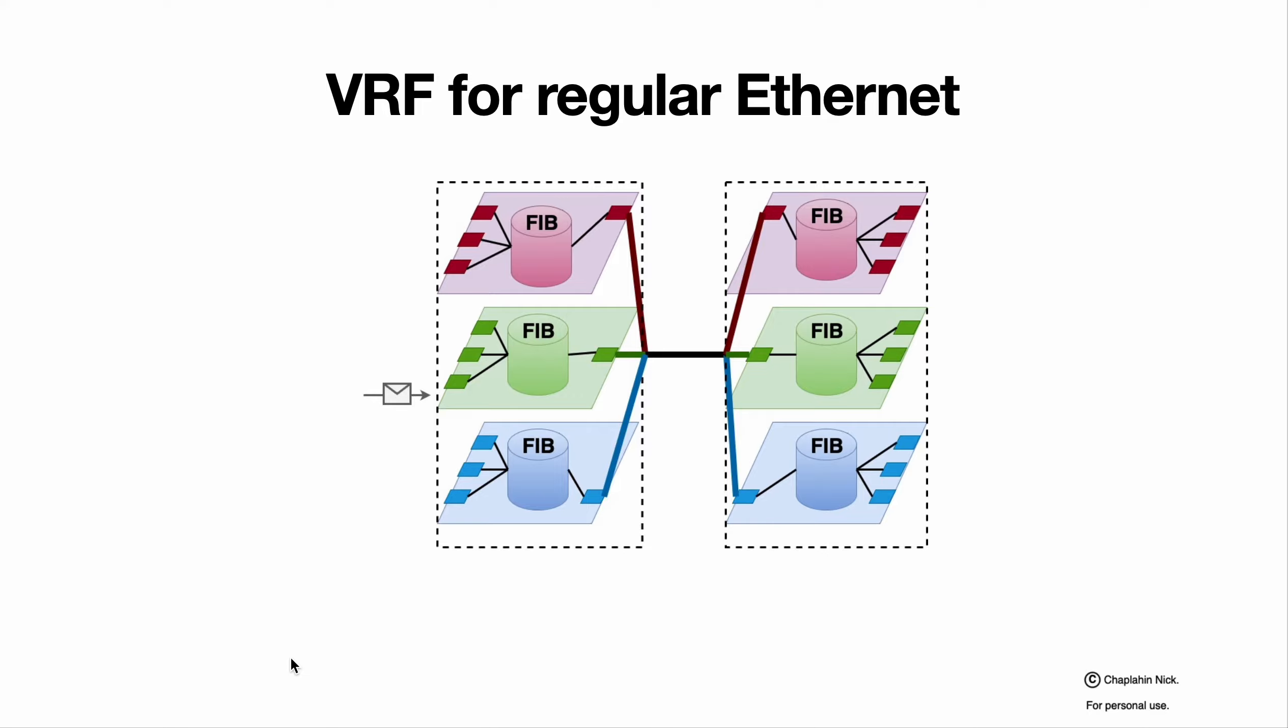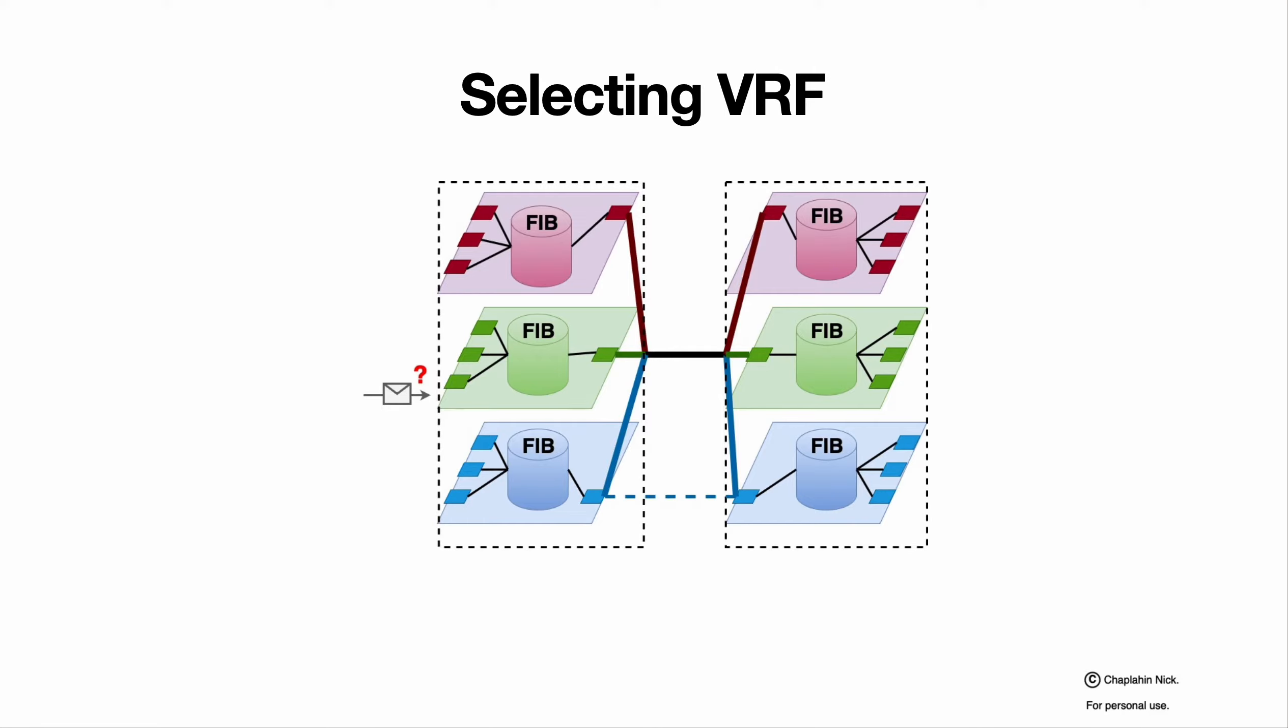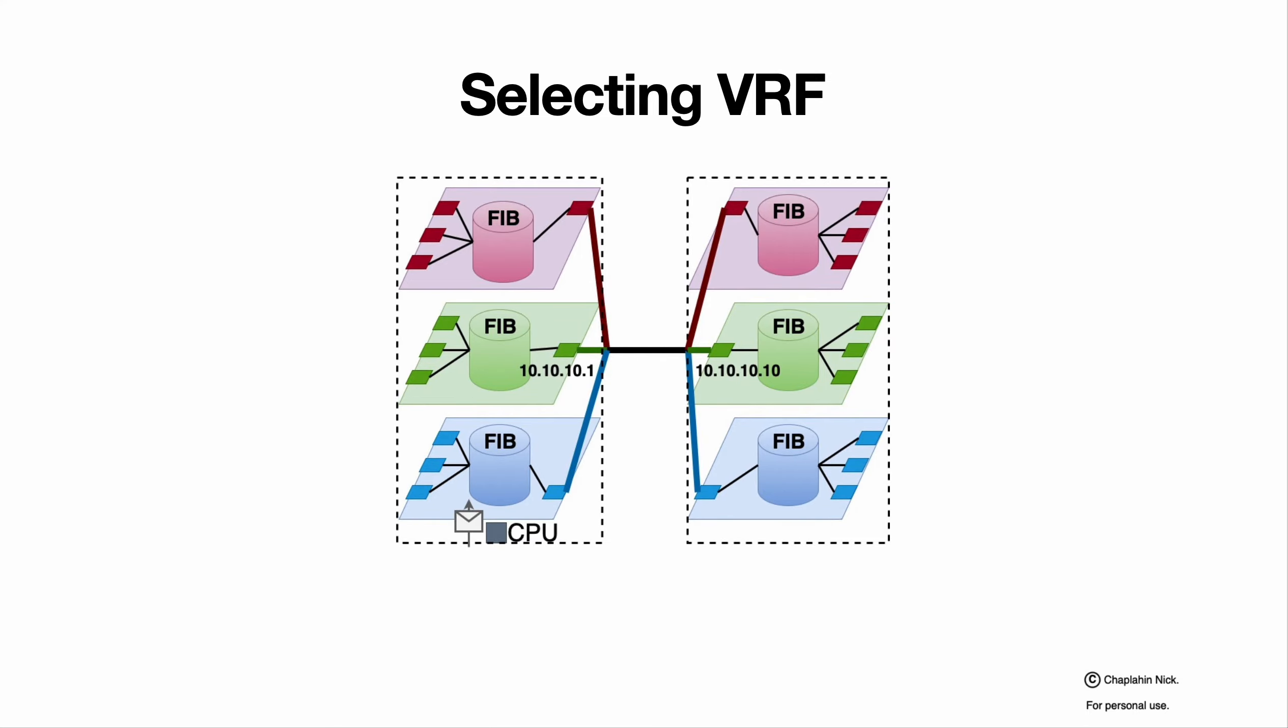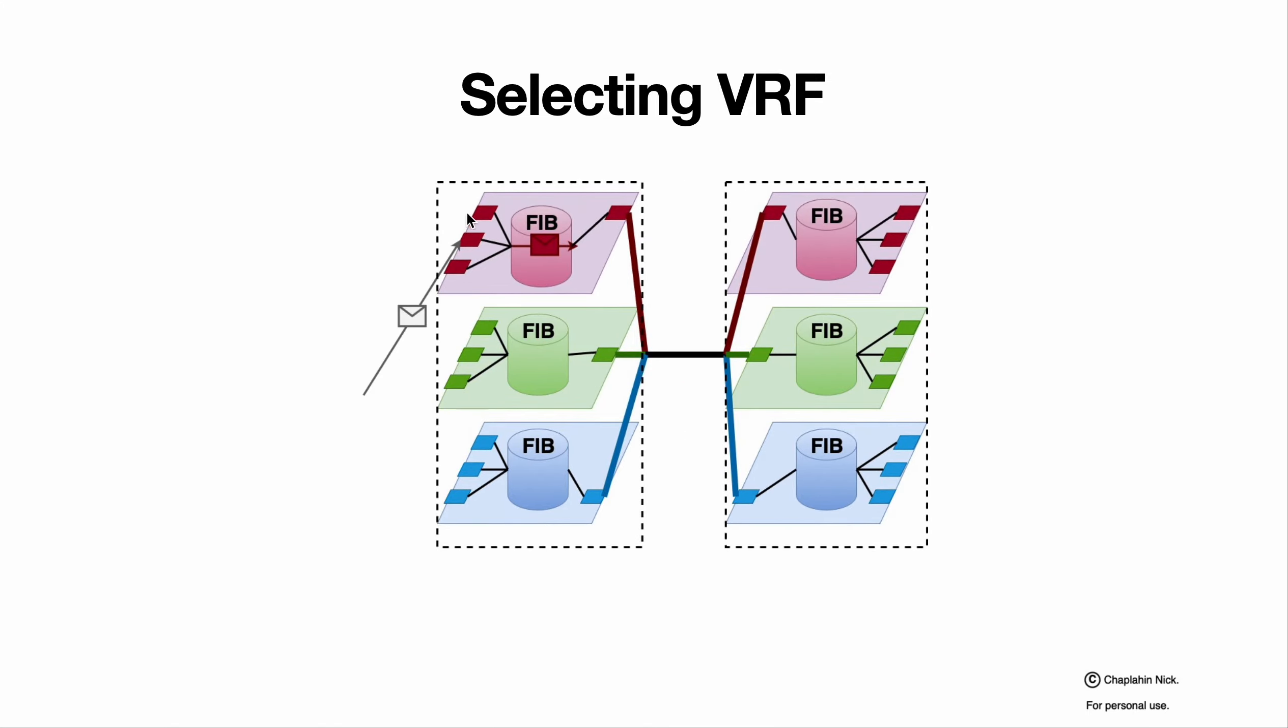How does system distinguish on which VRF packet needs to be processed? System distinguishes by inbound L3 interface. Through which L3 interface packet gets to the system, then this packet needs to be processed on VRF where this L3 interface is configured. Reminder: one L3 interface can be part of only one VRF. If packet enters through another L3 interface, it will be processed on the VRF where this L3 interface is configured.